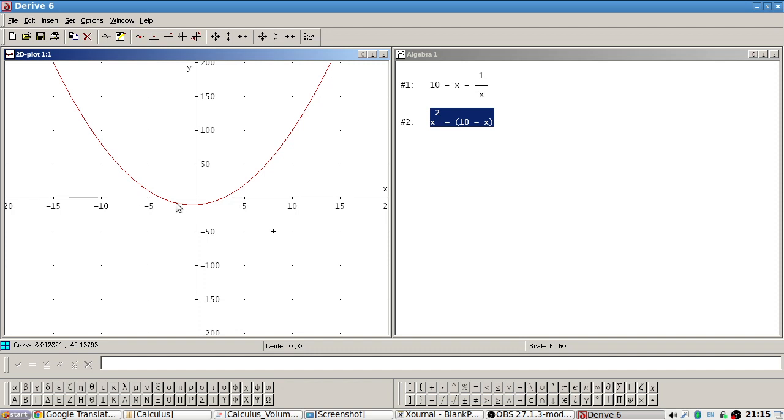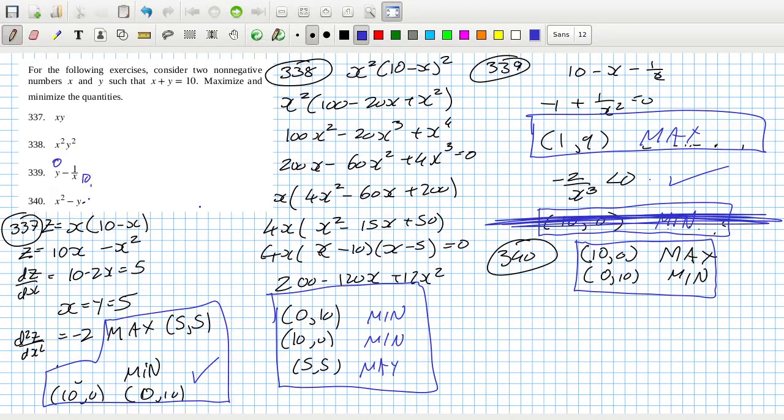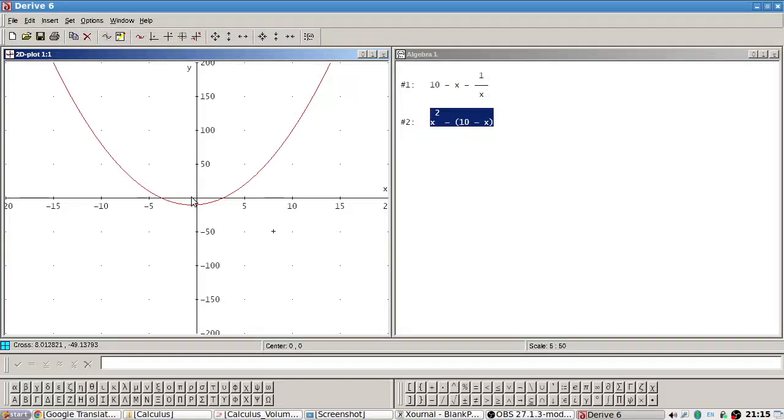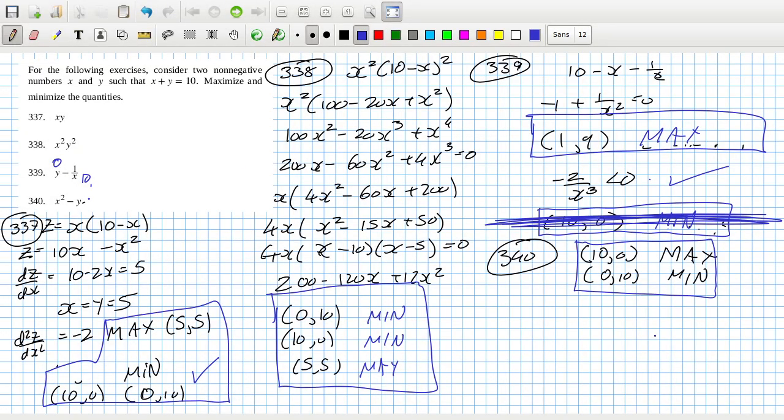Yeah okay so the minimum is one of them still has to be zero. Yeah and then the maximum is the 10 one. Yeah okay so that one is right.